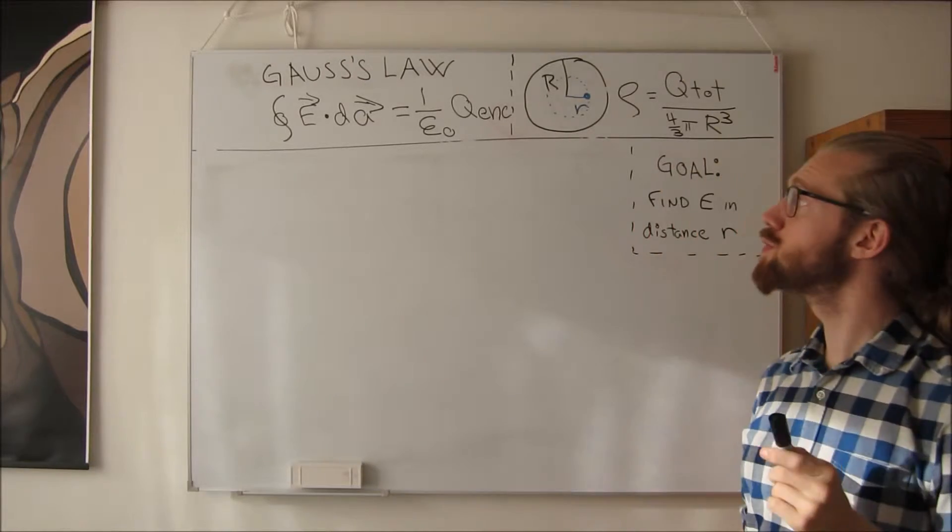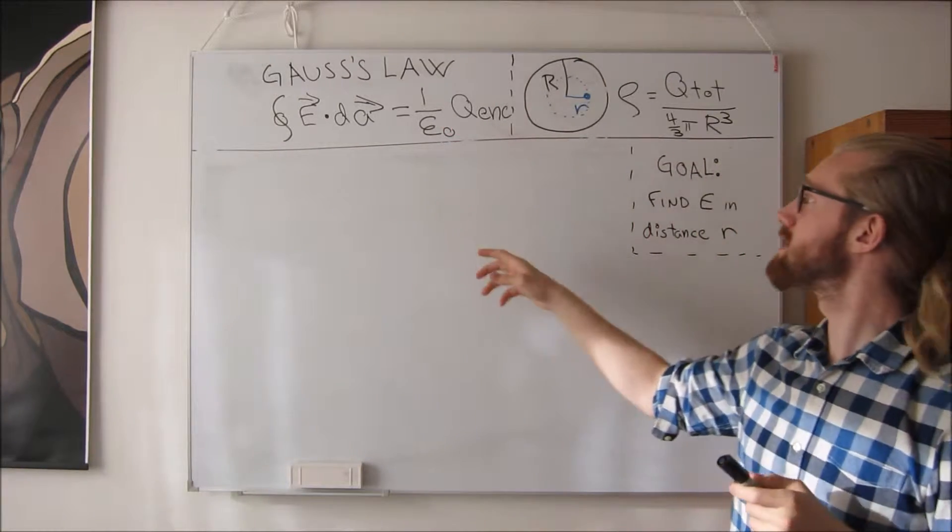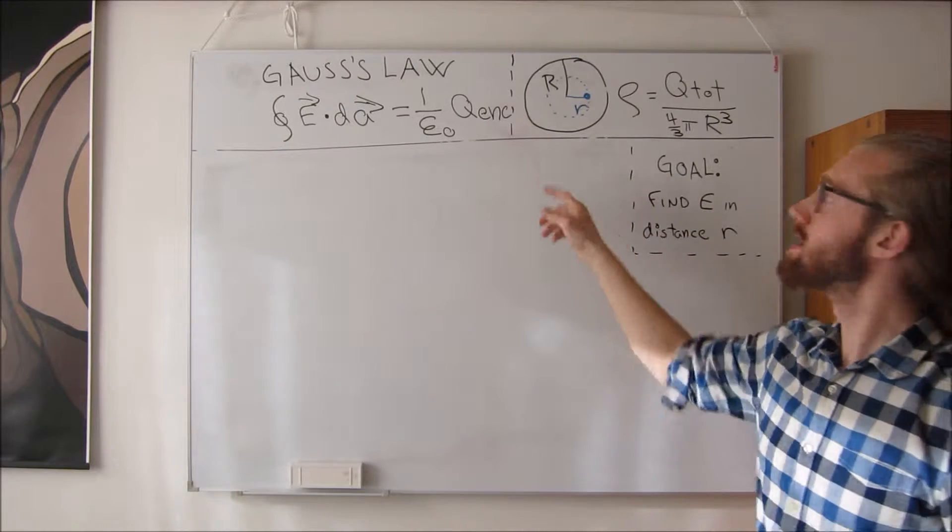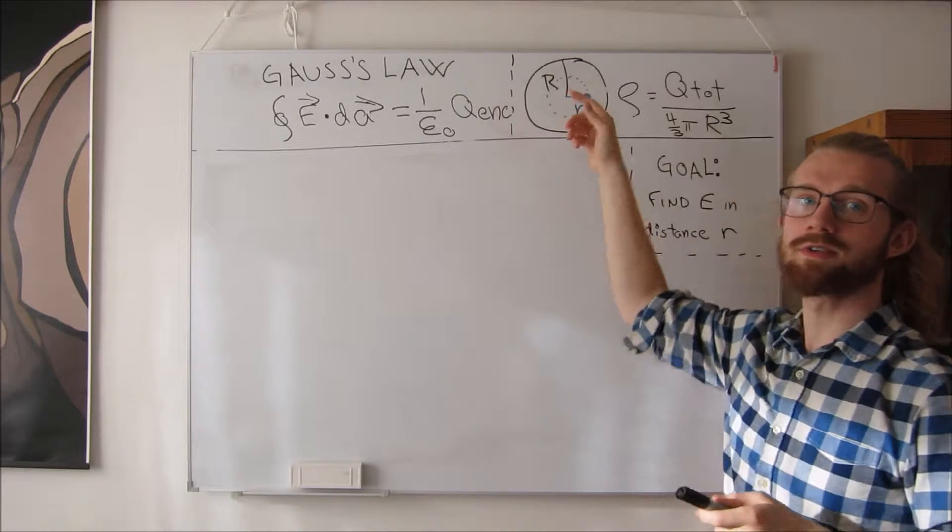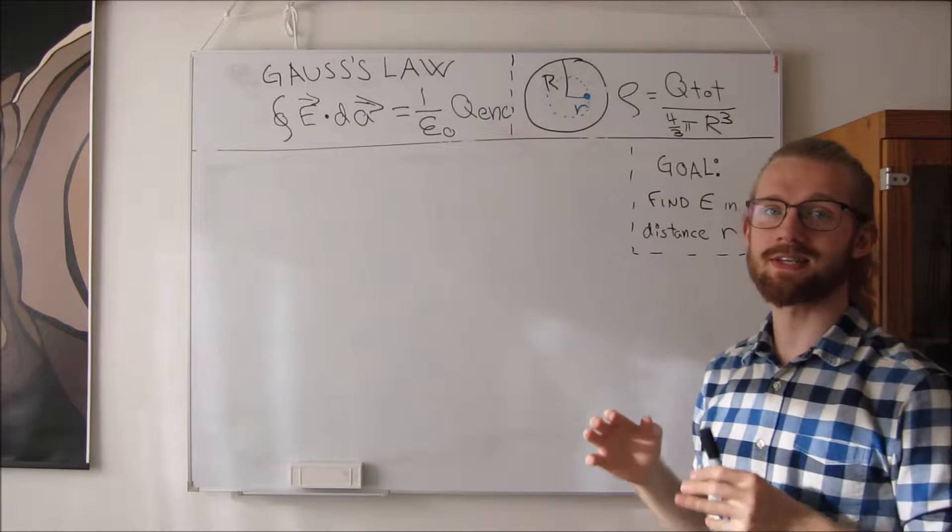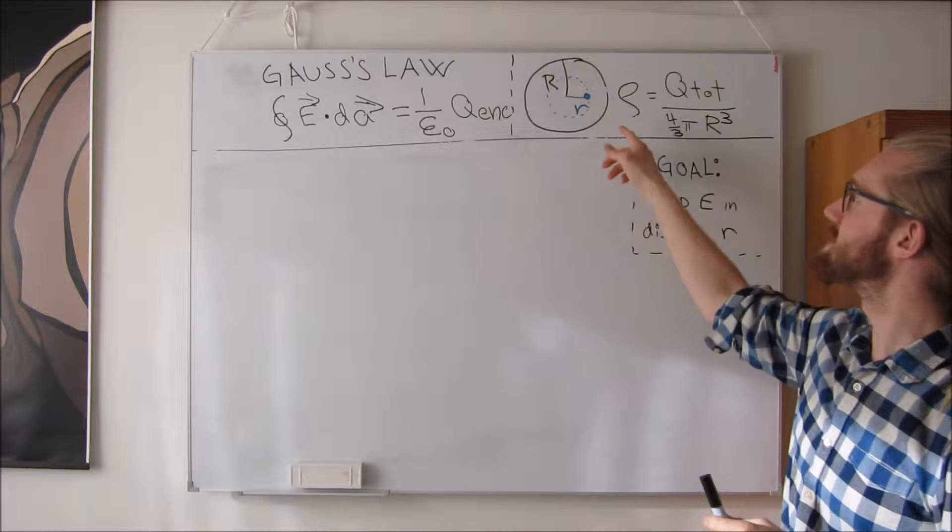In this video, we will use Gauss's law to find the electric field strength at distance r from the origin of a sphere. This sphere has a constant charge density of rho.